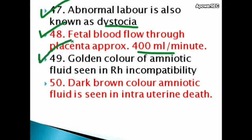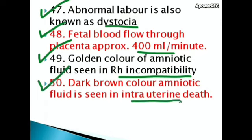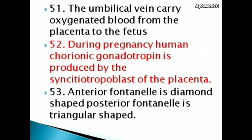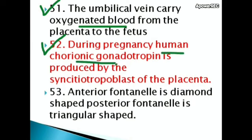Golden color of amniotic fluid is seen in Rh incompatibility. Dark brown color amniotic fluid is seen in intrauterine death. The umbilical vein carries oxygenated blood from the placenta to the fetus. During pregnancy, human chorionic gonadotropin (HCG) is produced by the syncytiotrophoblast of the placenta.